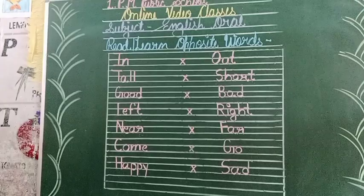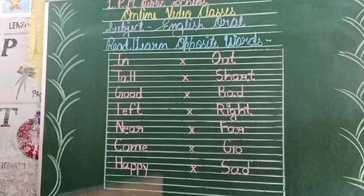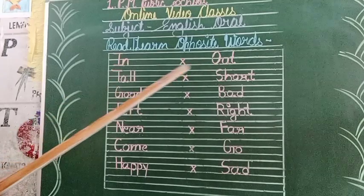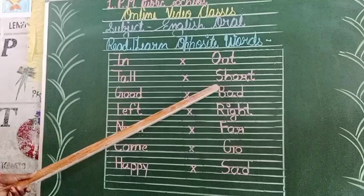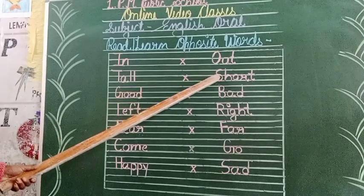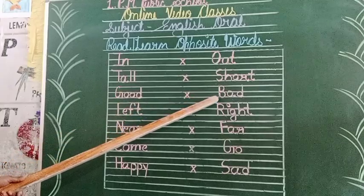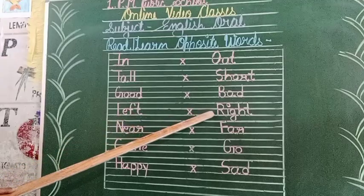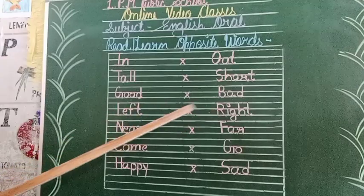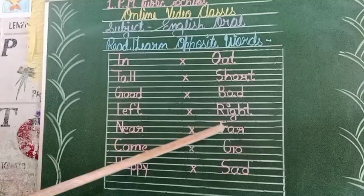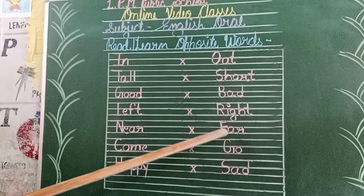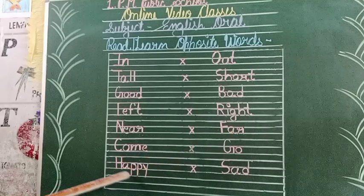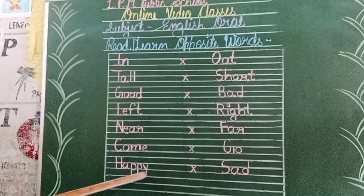Repeat after me. In — opposite — out. In — opposite — out. Happy — opposite — sad. Happy — opposite — sad. Good — opposite — bad. Good — opposite — bad. Left — opposite — right. Left — opposite — right. Come — opposite — go. Come — opposite — go. Happy — opposite — sad. Happy — opposite — sad.